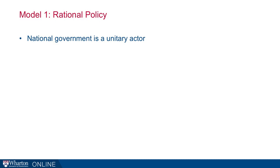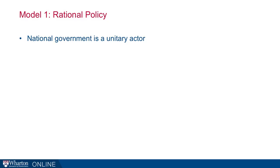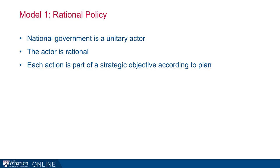Model 1 is rational policy, or rational analysis. In this model, the national government is a unitary actor — there's no dispersion of interest underneath it. It's essentially a single solitary person. And that actor is rational — a critical bit. There's no room for biases, misunderstanding, or lack of information. Each action you observe is part of a strategic objective according to some plan to accomplish the goal.